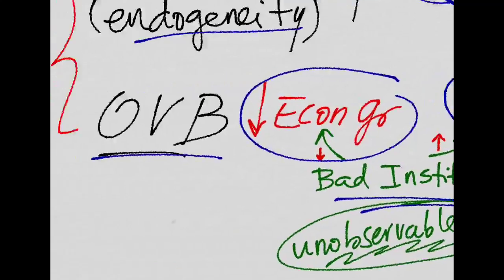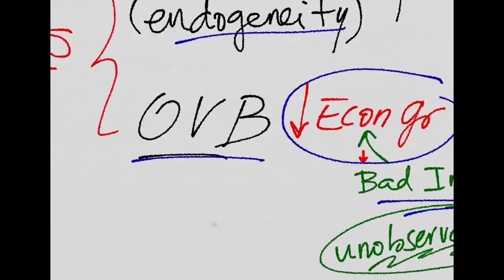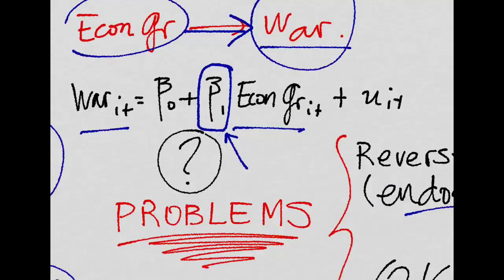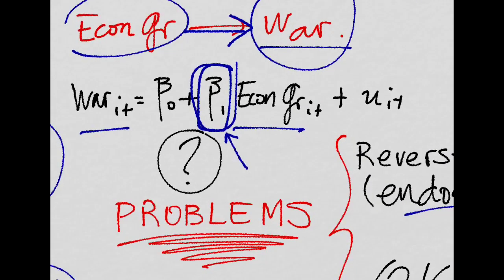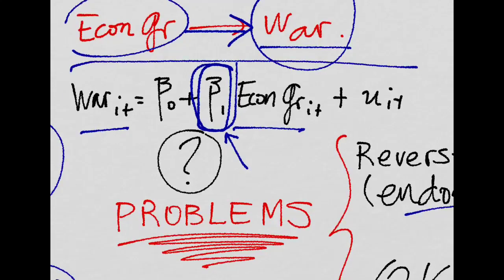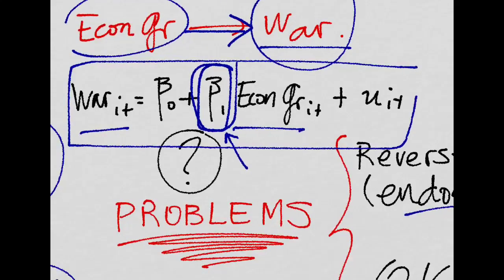However, this bias, this omitted variable bias, will produce estimates of this coefficient when just running this regression that are not close to the true one.